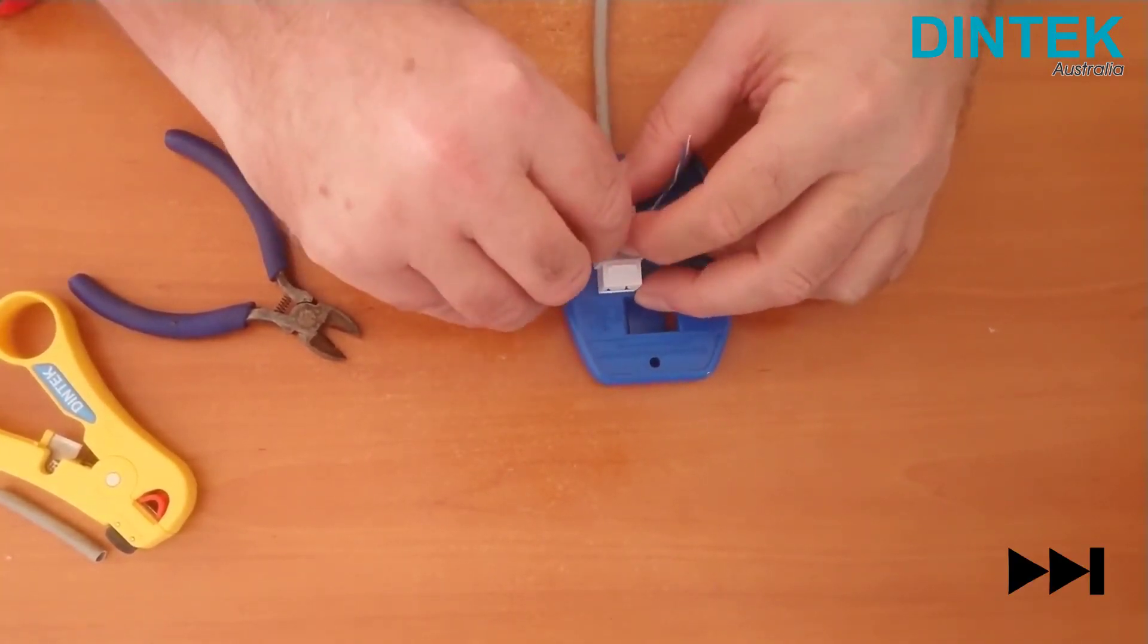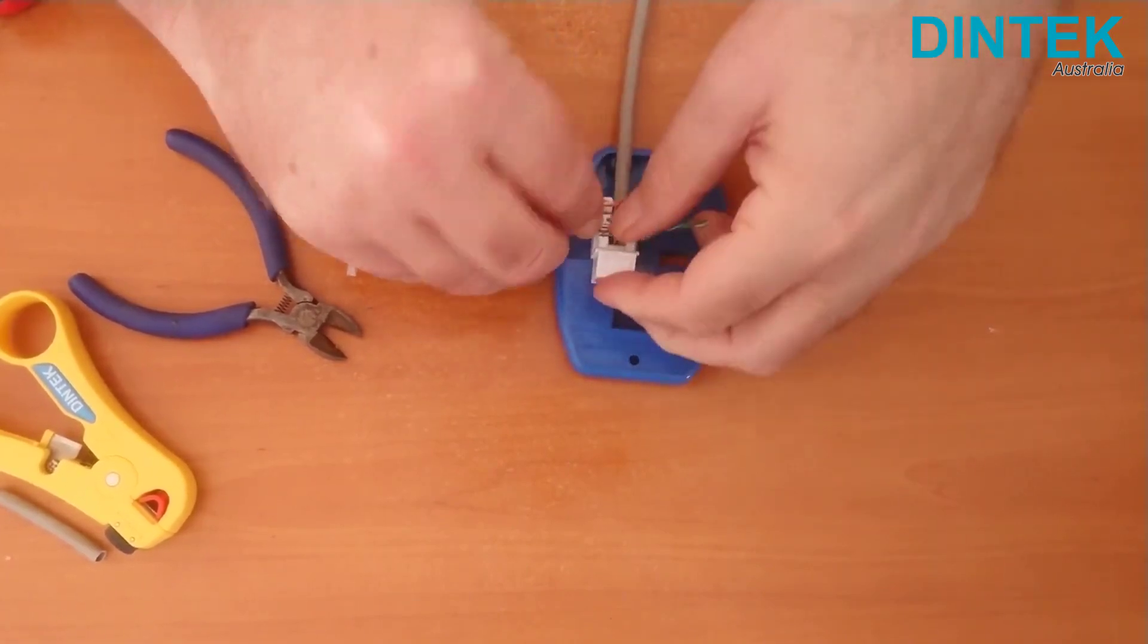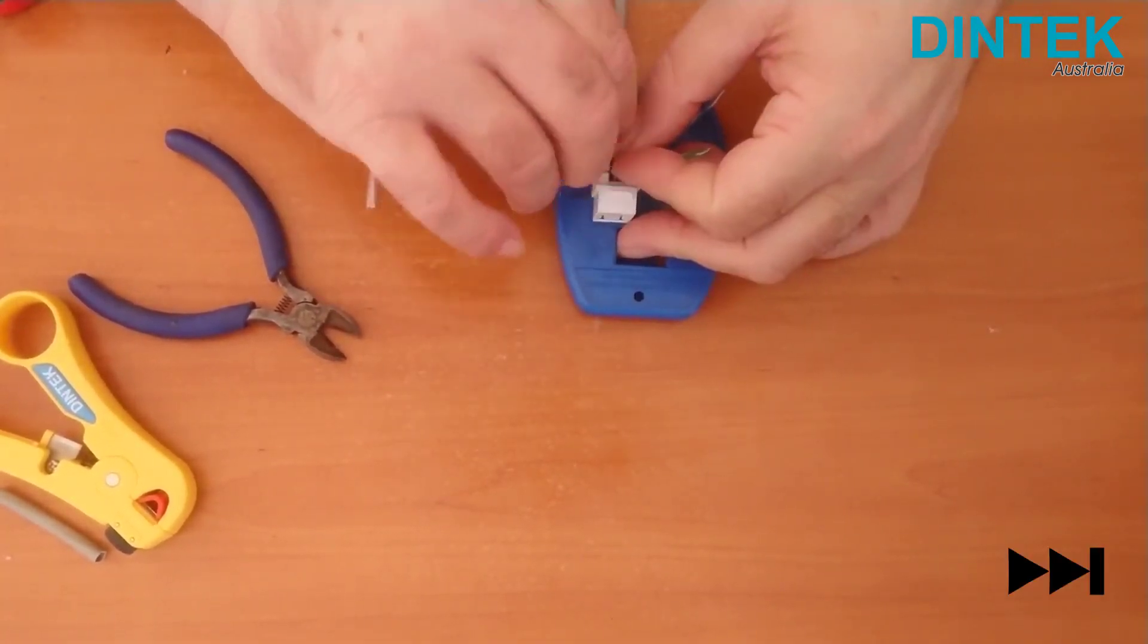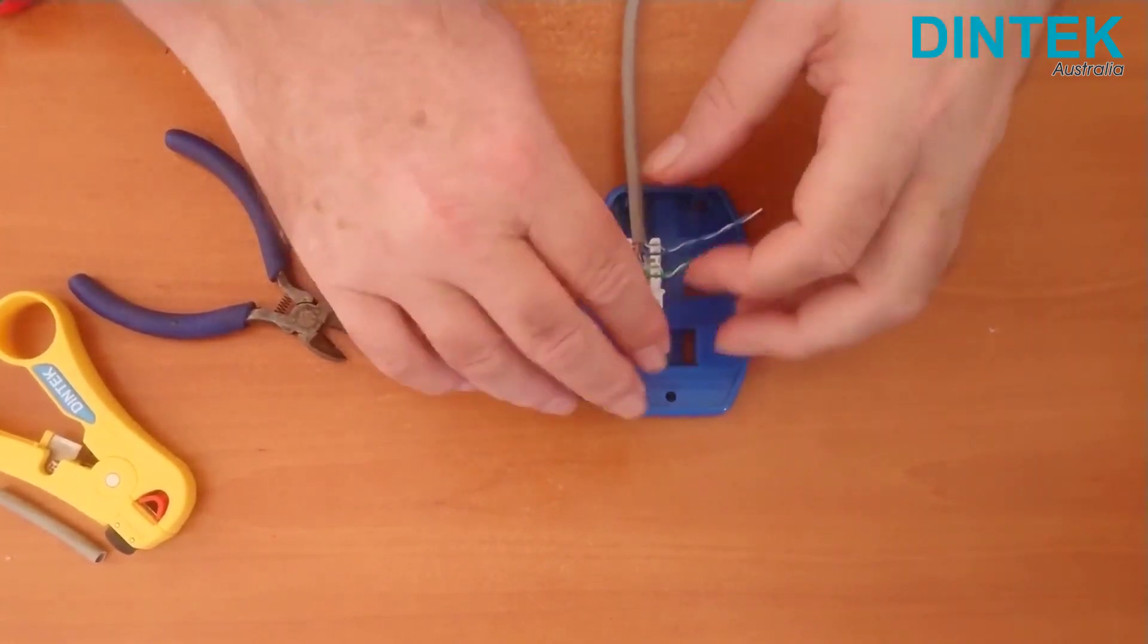You really want to avoid untwisting the wires inside the jack, especially with CAT6 and above cable. If you're having trouble getting a pair around the right way, you're better off putting another twist in rather than untwisting them inside the jack.